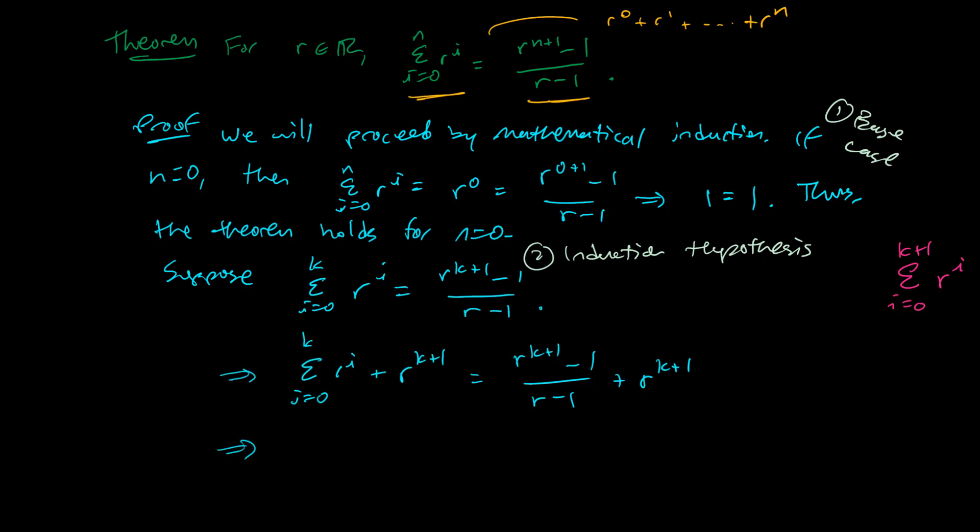So then, bringing in the r to the k plus 1 power into my series, I'm allowed to do that. All I just need to do is make sure my series doesn't stop with the kth power, but the k plus 1th. So it goes from 0 to k plus 1. And on the right-hand side of the equation, I'm just going to get a common denominator. I'm going to multiply r to the k plus 1 times r minus 1 over r minus 1, and I'm adding those.